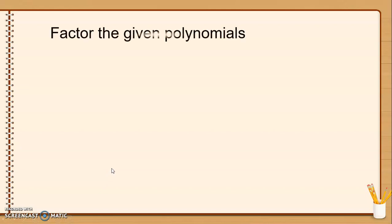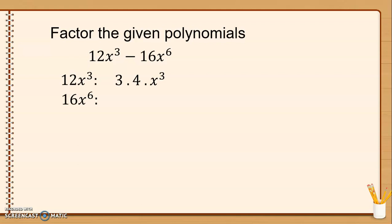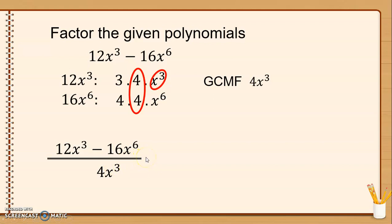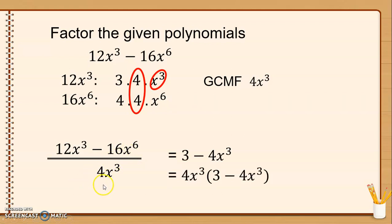Last example: 12x cubed minus 16x to the power of 6. Factors of 12: 3 times 4 times x to the power of 3. 16 is 4 times 4 times x to the power of 6. Common number is 4, and the variable with the lowest degree is x cubed. So GCMF is 4x cubed. 12x cubed divided by 4x cubed equals 3. Minus 16x to the 6th divided by 4x cubed equals 4x cubed. Combined: 4x cubed times (3 minus 4x cubed).